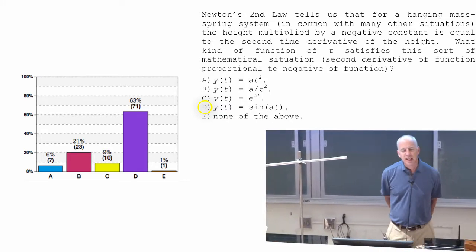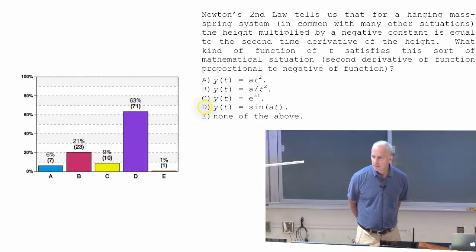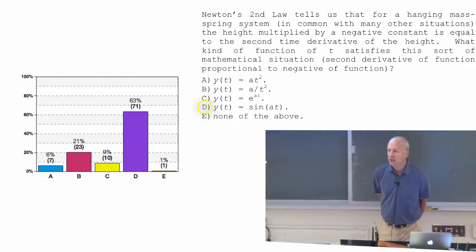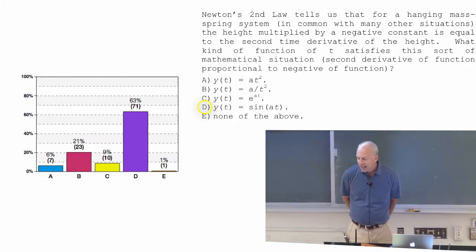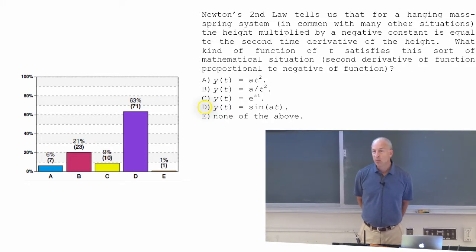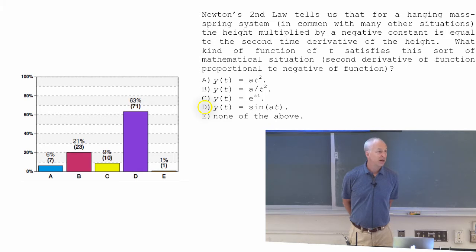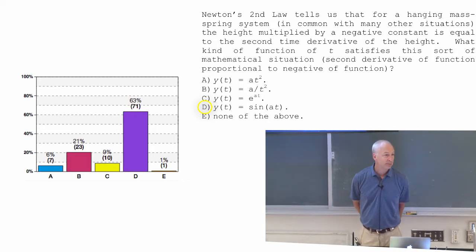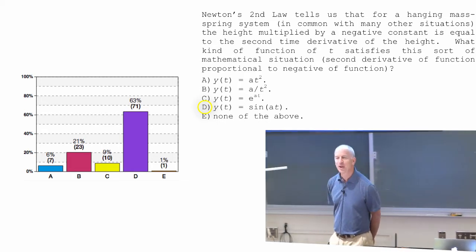Actually, if you take two derivatives of an exponential function, that's C, you get another exponential function. You get A squared times the exponential function. A squared is not gonna be a negative number, unless A is an imaginary number. So let's not deal with that. Although there are situations in engineering and in physics where it's useful to take A to be an imaginary number, and then an exponential with an imaginary exponent is an oscillating function. But we're not gonna do here, so we're gonna work with sine.